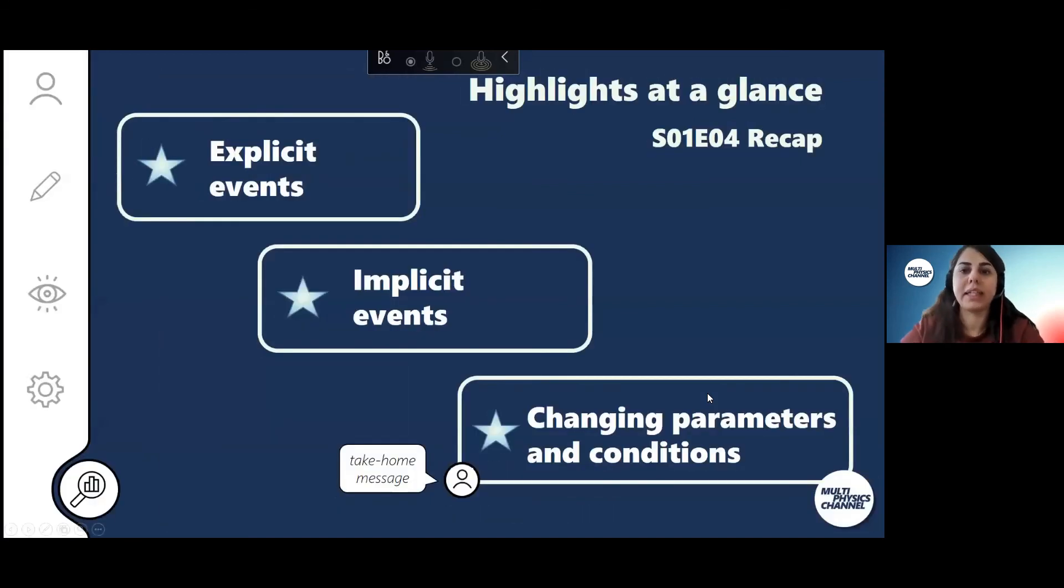Okay, let's get back here. So highlights of today: we're talking about explicit events, implicit events, and how we can change parameters and conditions. But I want to focus and highlight more that we can change boundary conditions, which could be really important and hard to apply without using events.